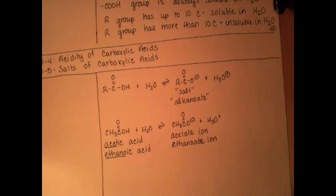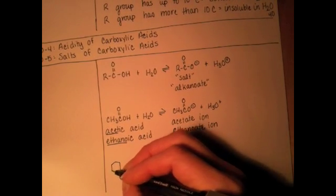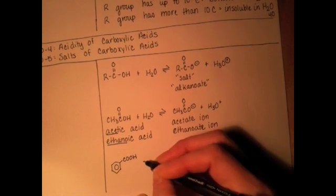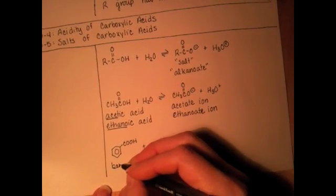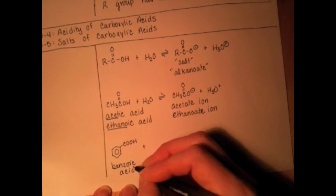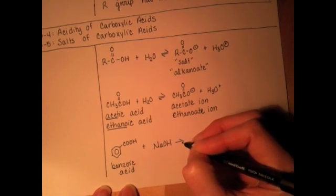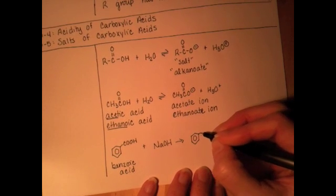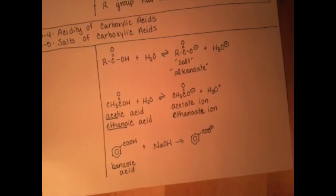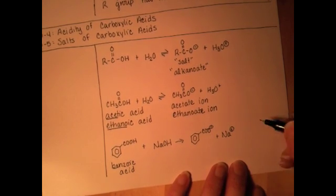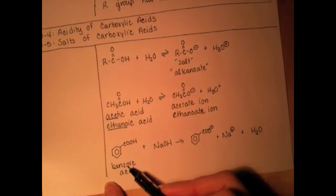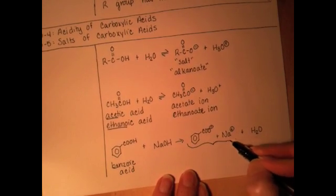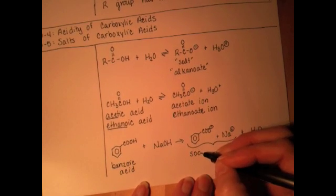Let's do a couple more. Let's say we have benzoic acid and we're going to react it with a little sodium hydroxide. It's going to deprotonate the benzoic acid, there's going to be a sodium cation countering that, and we're going to have a little bit of water formed from the hydrogen being plucked off by the hydroxide. This anion is the benzoate ion, and collectively the cation and anion together would be referred to as sodium benzoate.